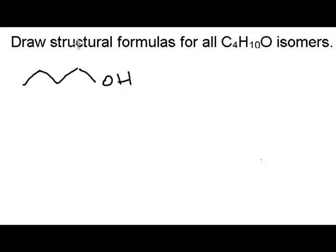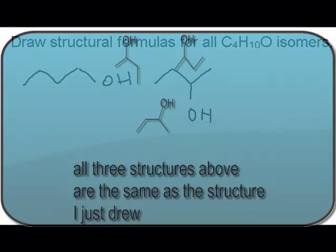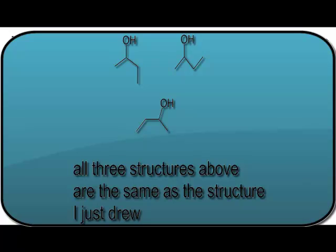However, if we had a four carbon chain and we decided to put the oxygen off of one of those central carbons, we now have created a different isomer. So those two compounds we would classify as alcohols and isomers of C4H10O. If we tried to put any other OH groups coming off of that straight chain, we'd find they're the same as those two compounds I've just drawn.